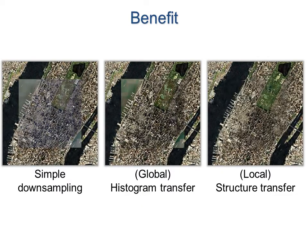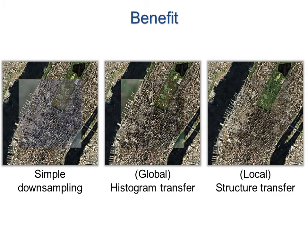When the fine scale image is only sparsely defined, such as in this inset square, structure transfer maintains spatial continuity with the coarse content.